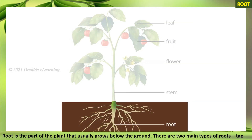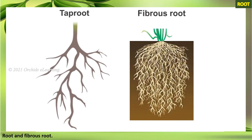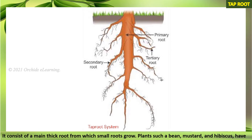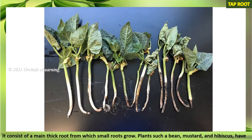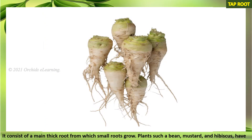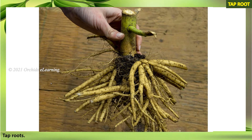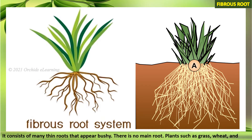The part below the ground is called the root. The root is the part of the plant that usually grows below the ground. There are two main types of roots: taproot and fibrous root. Taproot consists of a main thick root from which small roots grow. Plants such as bean, mustard, and hibiscus have tap roots.